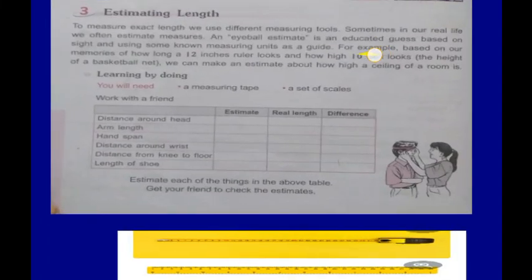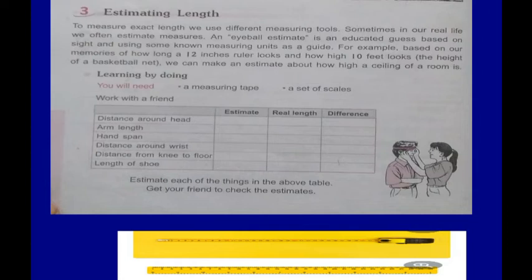Let's see what estimating length is. Estimating length — in short — is not the accurate length. It is not the exact length of anything; that is said to be estimation. We think that the length of something is around a certain number. For example, you have seen your book and you also have a scale. You can estimate that the length of your book is near about 20 centimetres — without a scale, just from memory. That is said to be estimation.